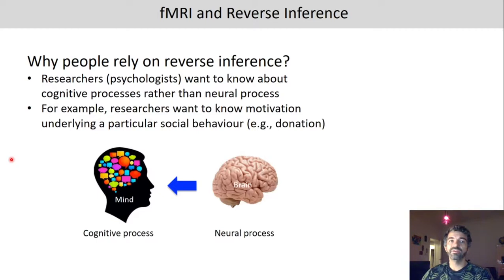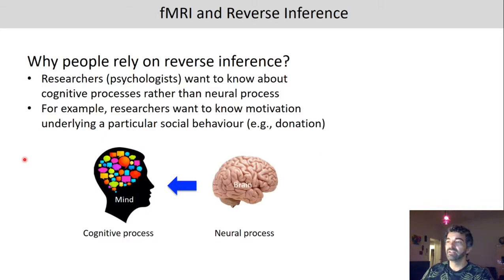So why do people rely on reverse inference? As psychologists and researchers, we want to know about cognitive processes rather than the neural process itself. For example, we might want to know about the motivation underlying a particular social behavior, and we might be able to measure that by looking at the neural process, but we're not interested in the neural process itself.